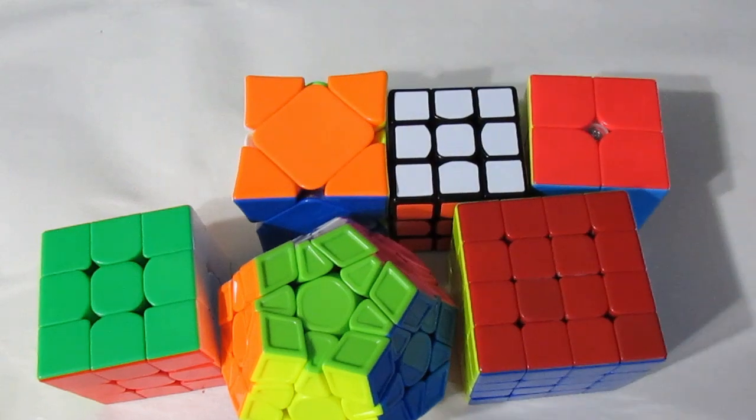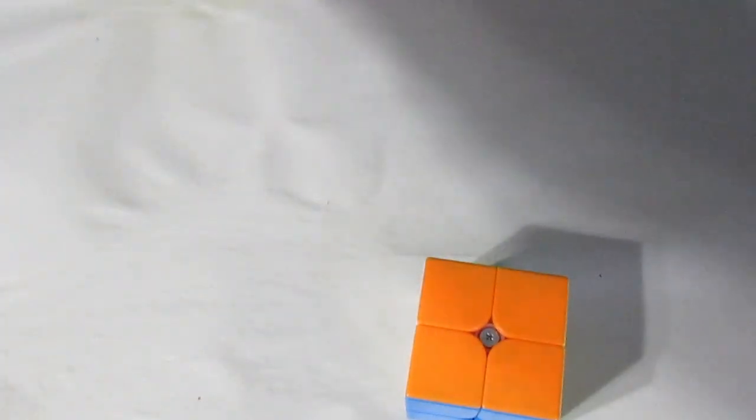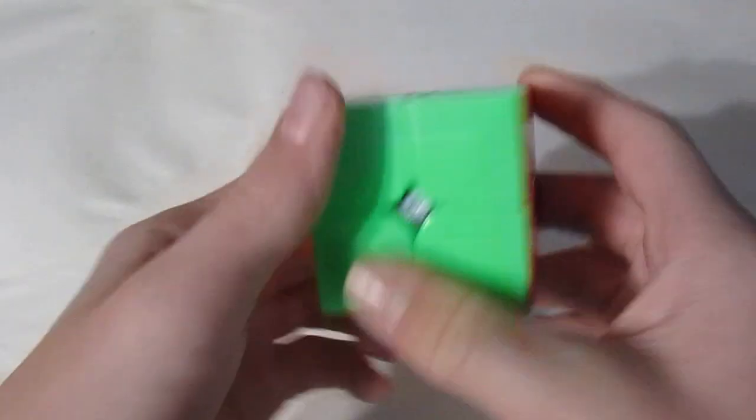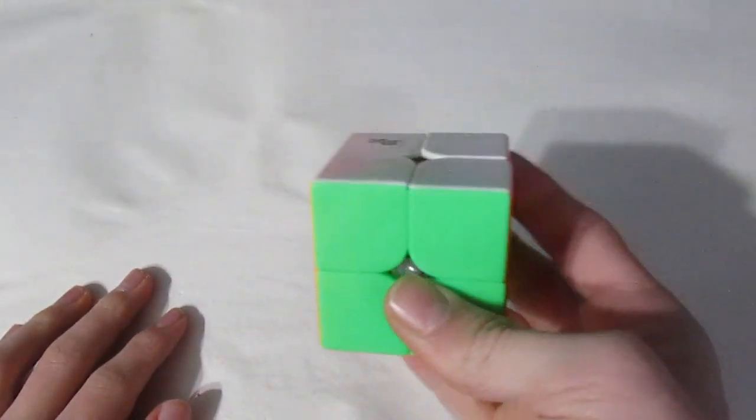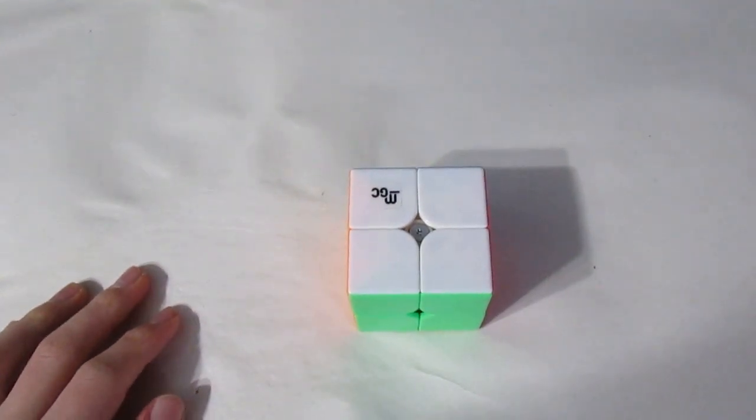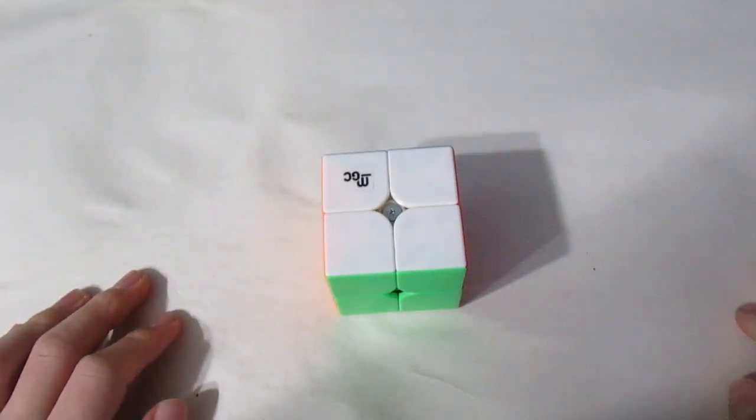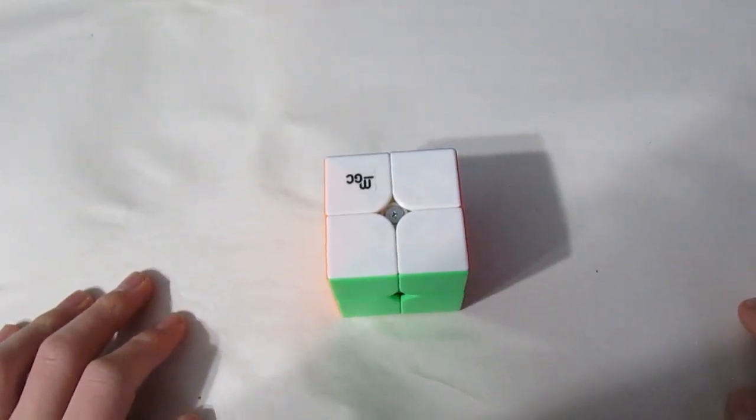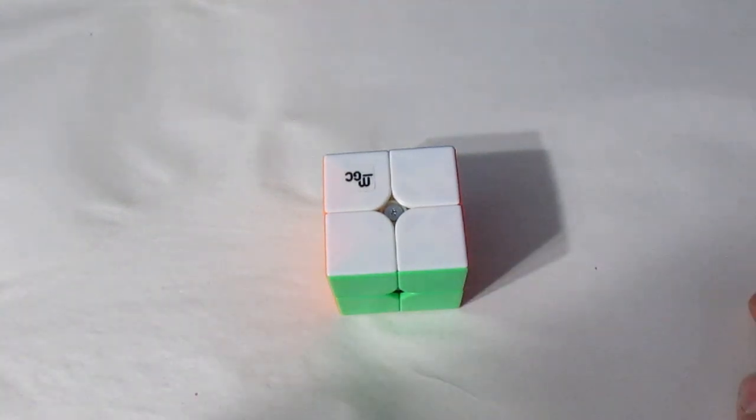For 2x2, I'm just using my MGC, which I'm gonna be using for a while because I don't invest too much in 2x2s. I'm aiming for somewhere around a 3.5 average and a sub-3 single.